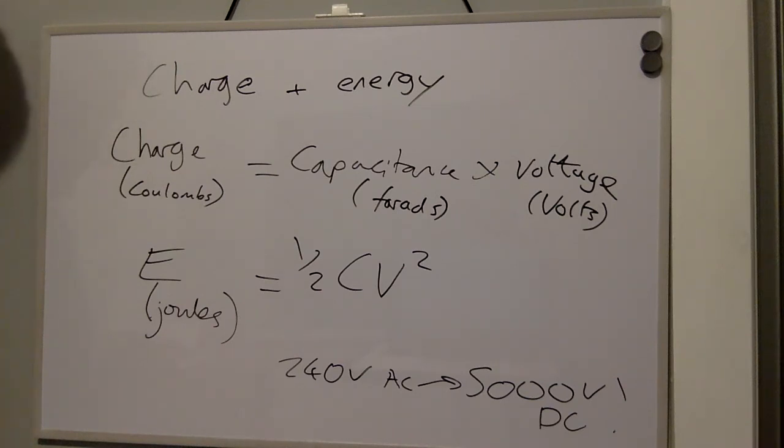Finally, I'll list the standard energy used for defibrillation. For monophasic it's 360 joules, for biphasic 150 joules, and implanted cardioverting defibrillators or ICDs use 30 to 50 joules.